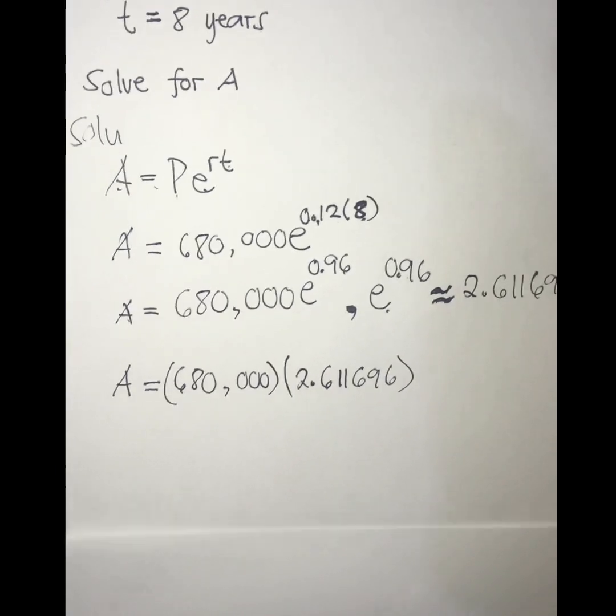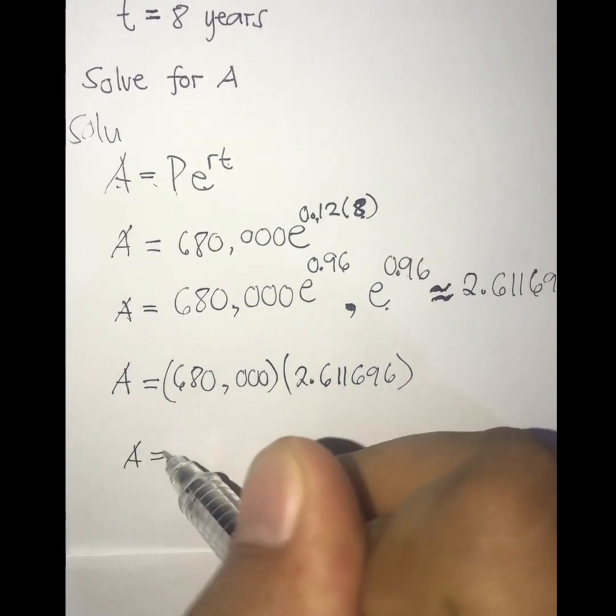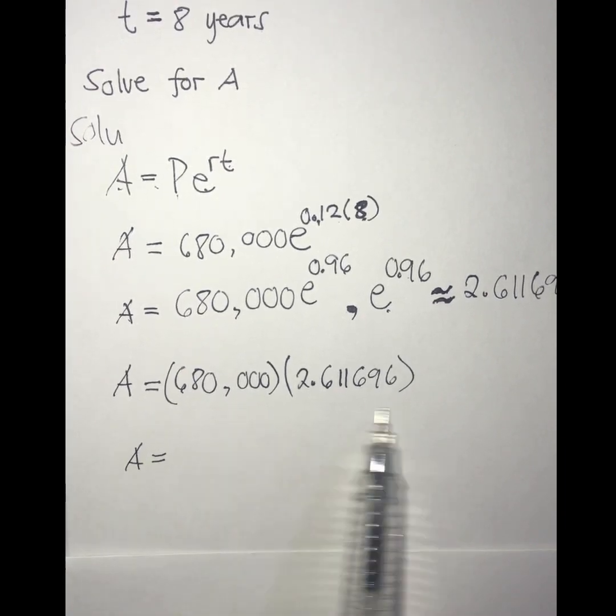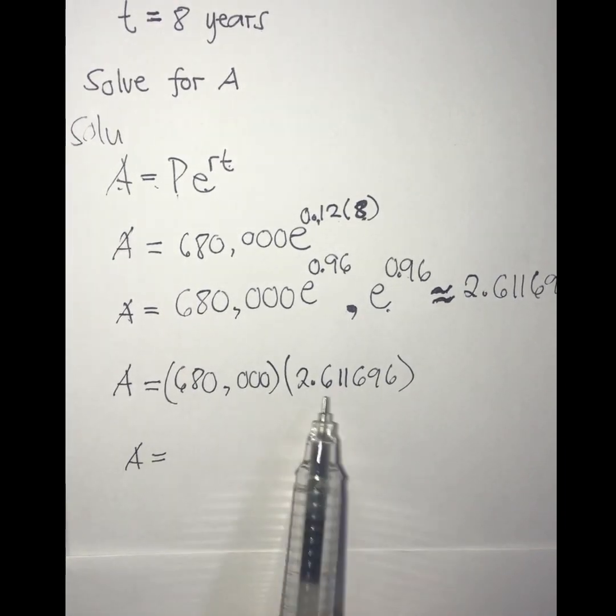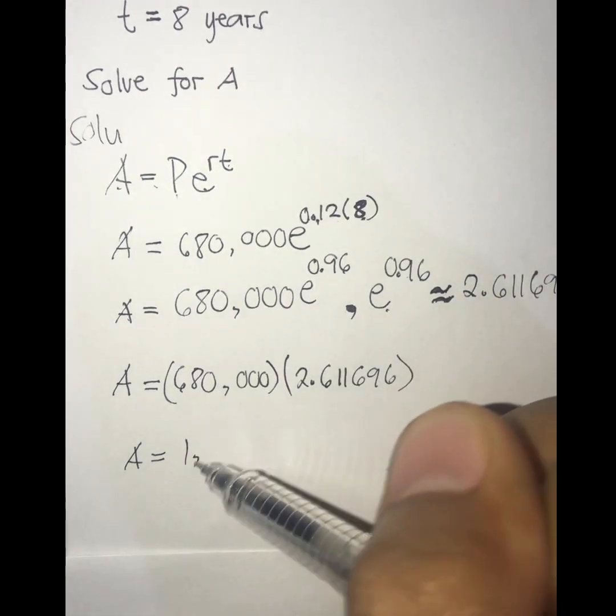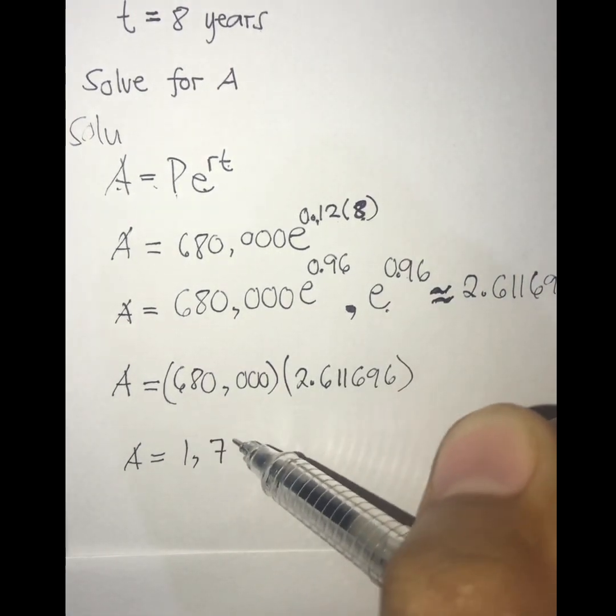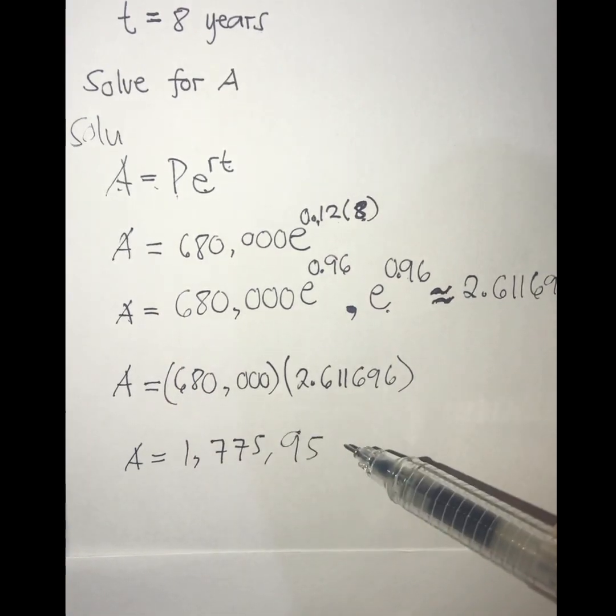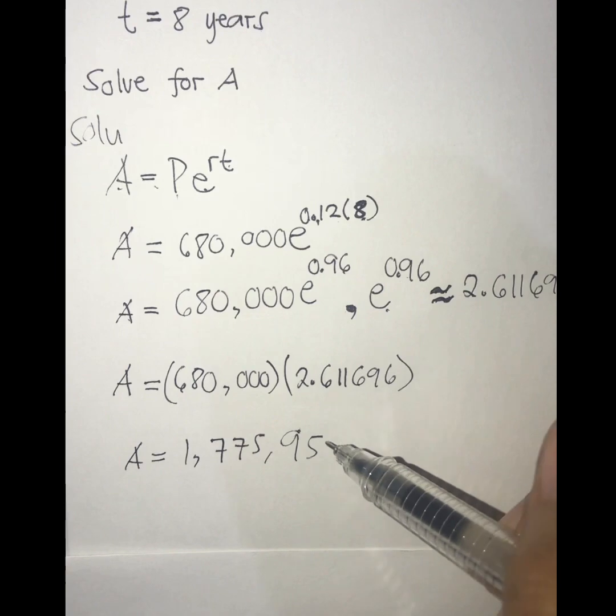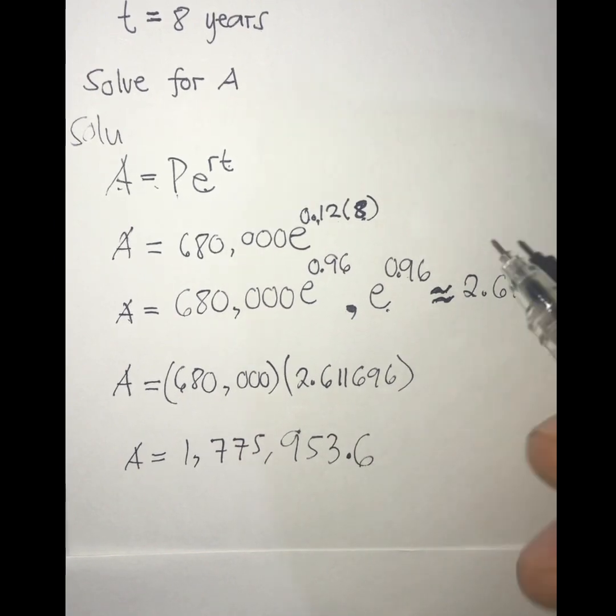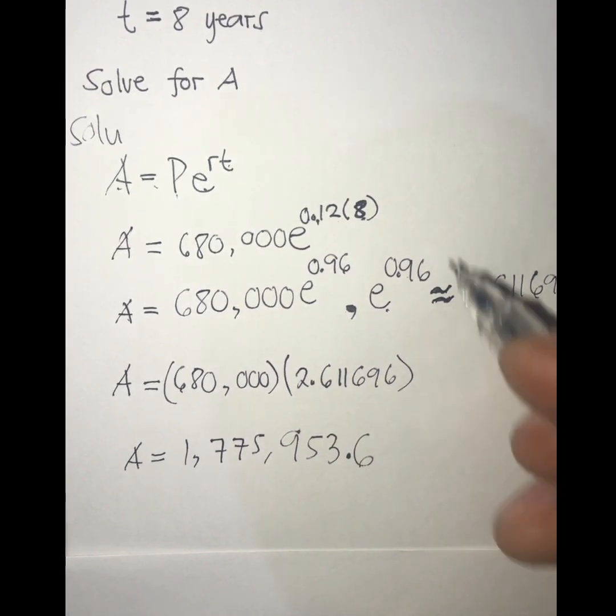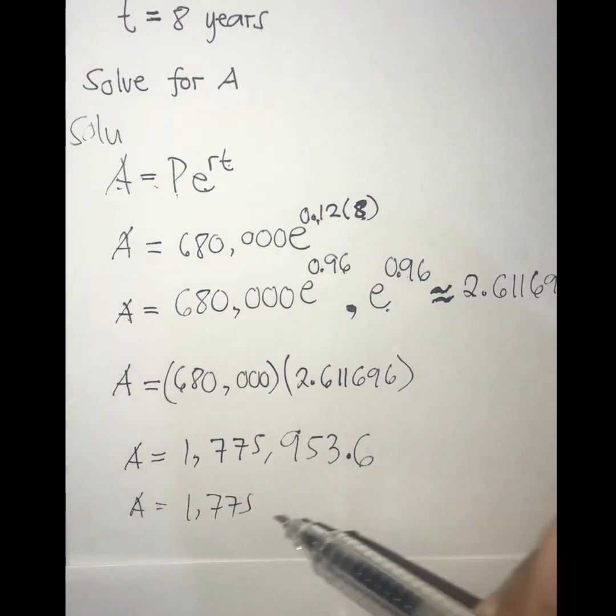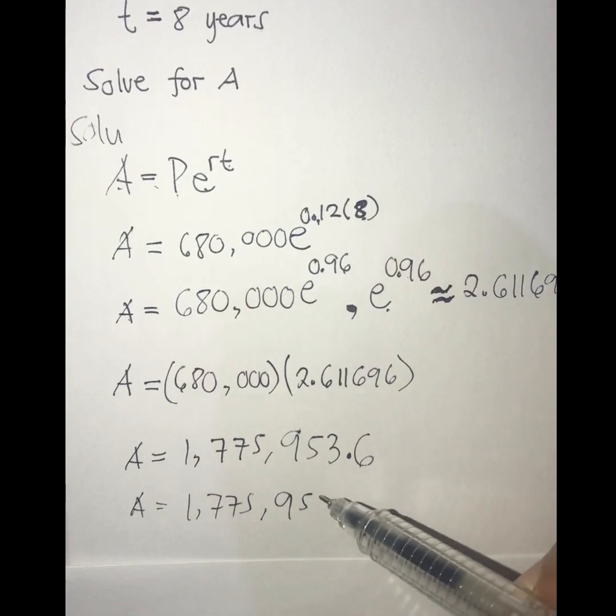So here we go, A is equal to, using the calculator, we can have the product of this one, and the product of this one is 1,775,953.6. That is equal to A equals 1,775,954.